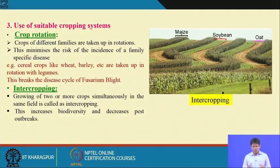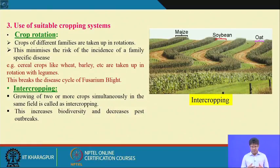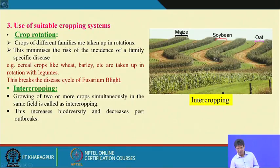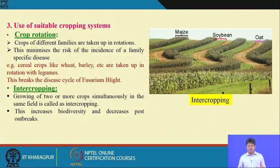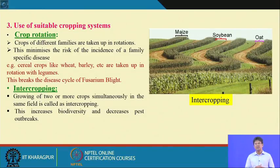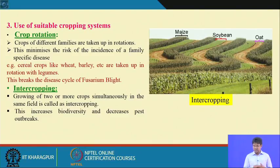Intercropping means growing two or more crops simultaneously in the same field. This practice increases biodiversity and reduces pest outbreaks. For example, maize, soybean, and oats can be intercropped in different rows. This minimizes pest and disease pressure, and including a leguminous crop in the intercropping system helps fix atmospheric nitrogen, reducing nitrogen fertilizer requirements while maintaining crop production and soil health.